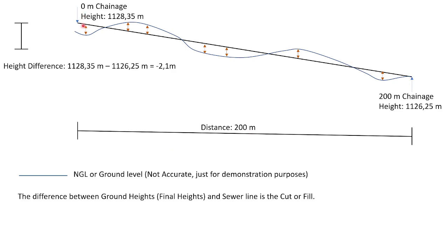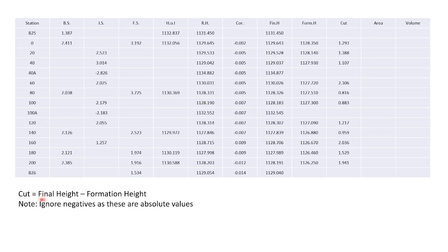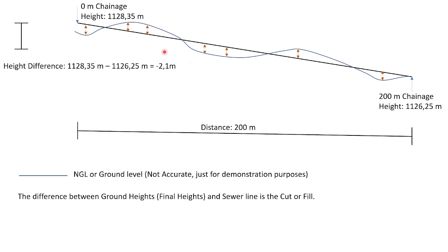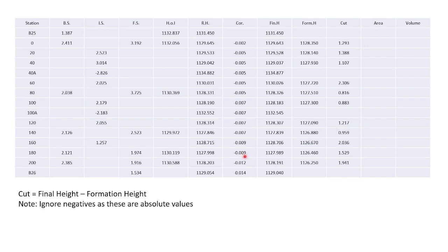Our initial final heights were our natural ground level, while our formation heights are the pipeline in this case. So we need to calculate the difference between the height of the pipeline and the height of the NGL at different chainages. Cut equals the final height minus the formation height. You can ignore the negatives as these are absolute values — it's the distance between the formation height and the final height — so we stick to positive values.